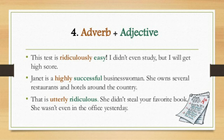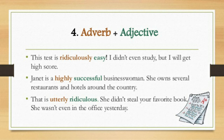Next example: 'Janet is a highly successful businesswoman — she owns several restaurants and hotels around the country.' Here 'highly' is the adverb and 'successful' is the adjective — 'highly successful.' The last example: 'That is utterly ridiculous.' — 'utterly' is the adverb and 'ridiculous' is the adjective. So in this fourth form, collocations are formed with the help of adverb plus adjective.